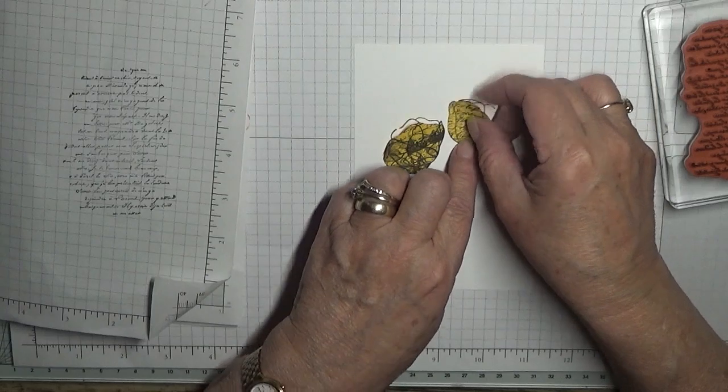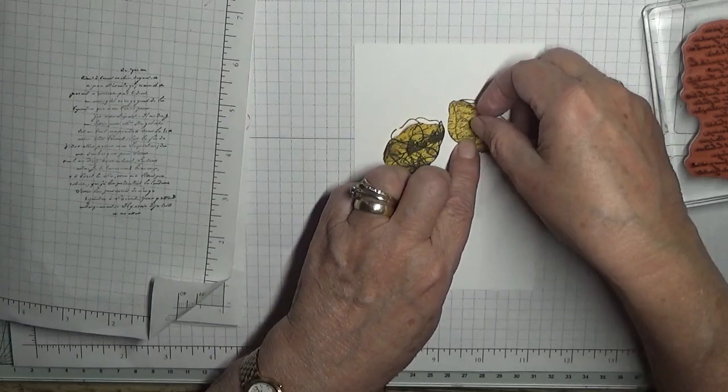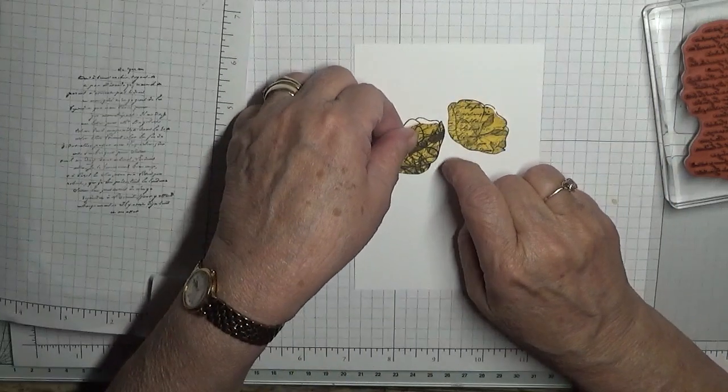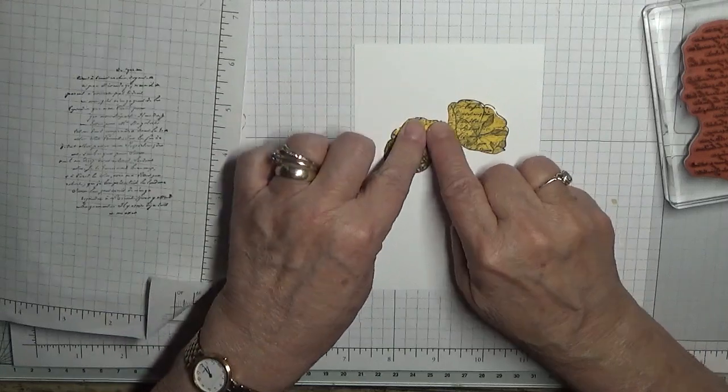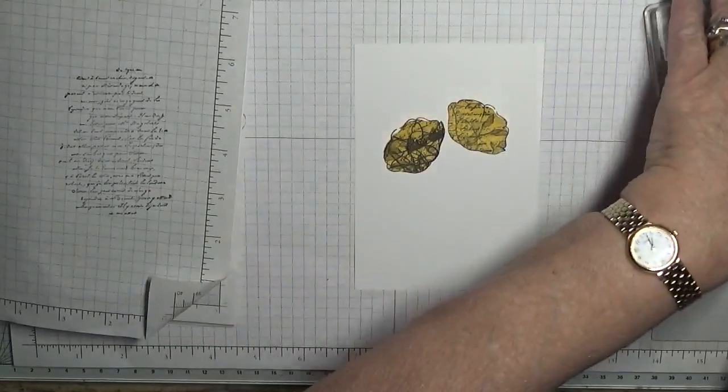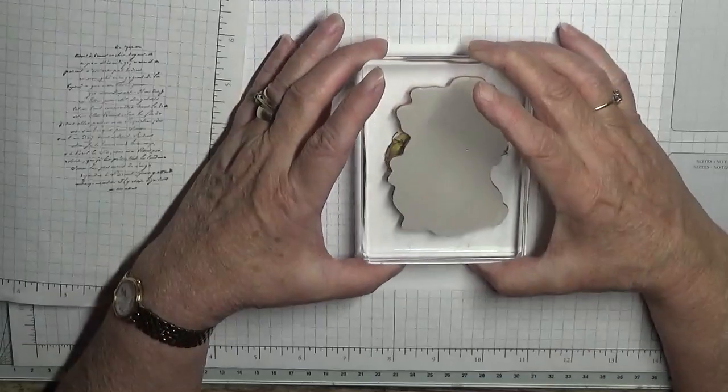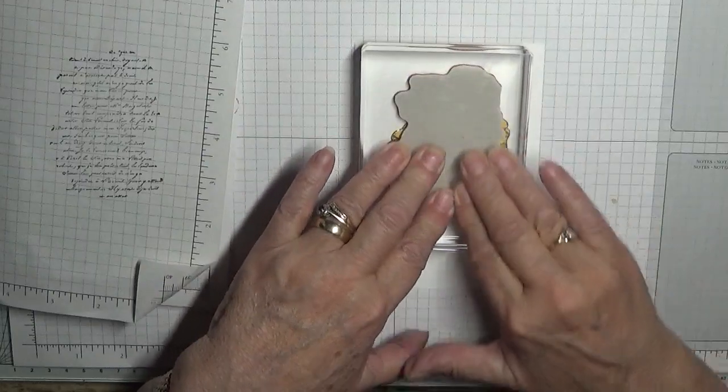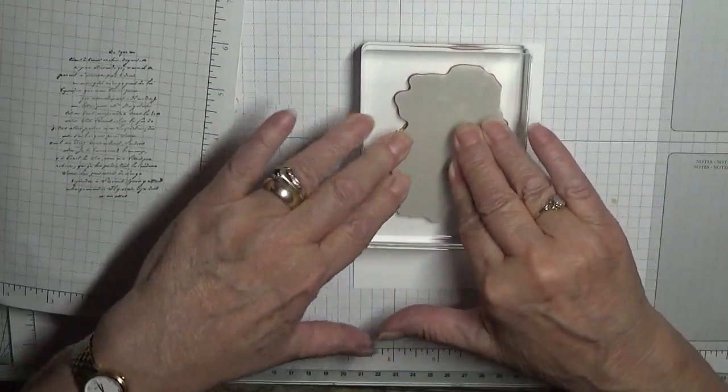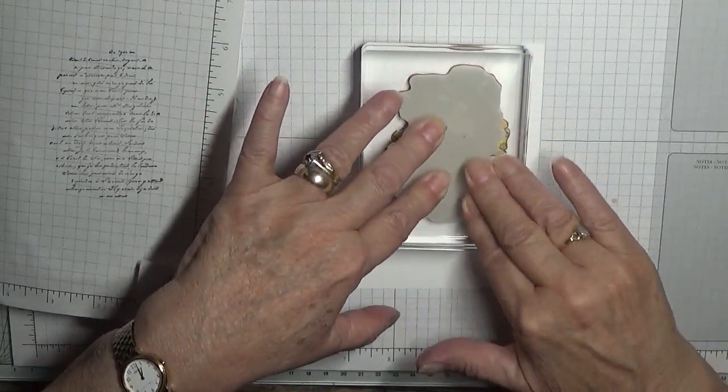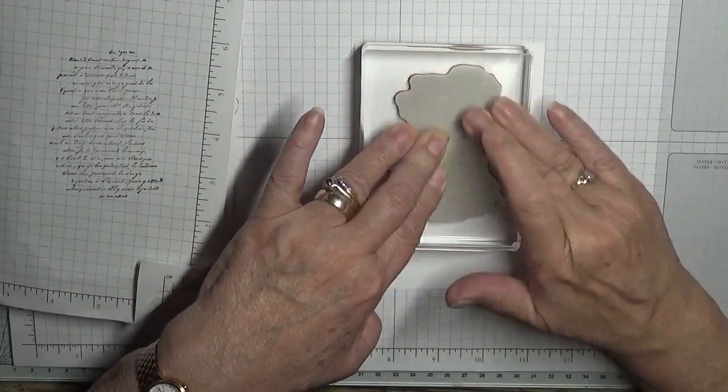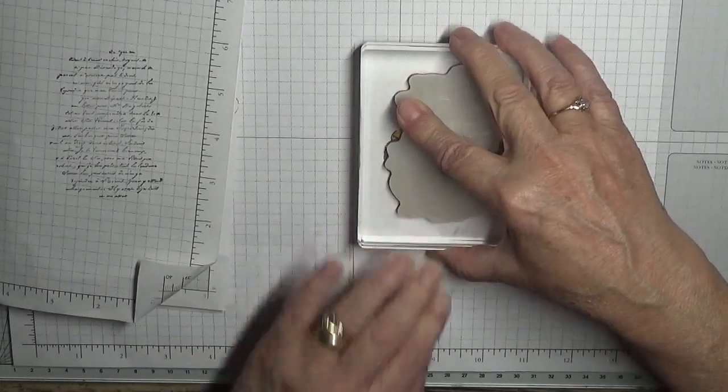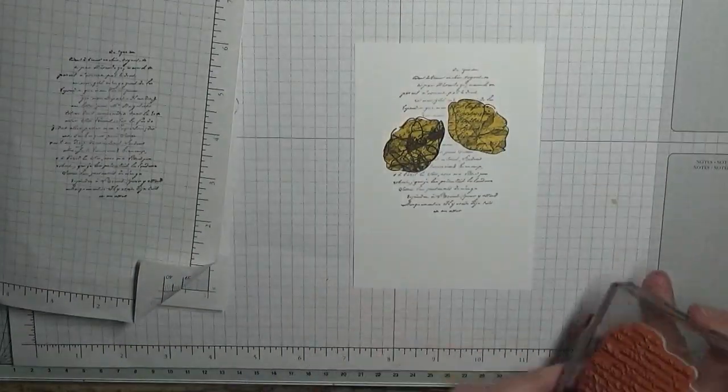Put the mask over them. Right, and then we put the script on. Nearly messed up then. And pop it down, and press a bit firmer than normal around by the masking paper. Which is fine.